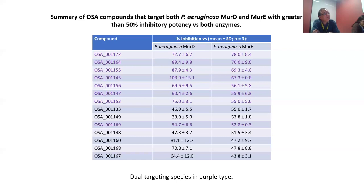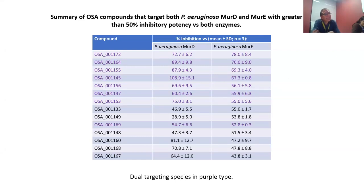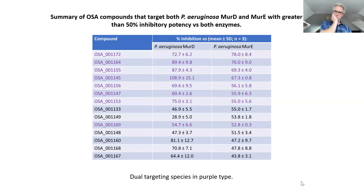A summary table directly compares inhibition data for MurD and MurE, identifying compounds with at least 50% inhibitory potency against one or both enzymes. That data has been sent over. Currently, the SphE assay is being trialed with this compound set, with data expected by the end of the following day and to be sent by end of week.